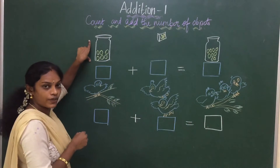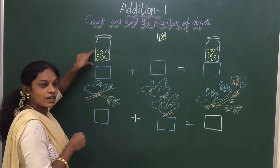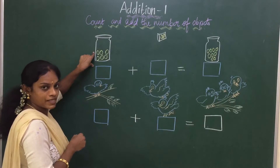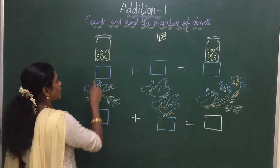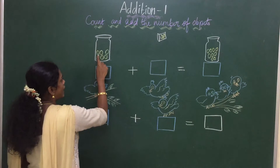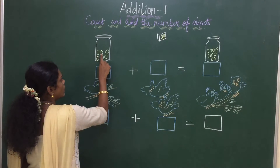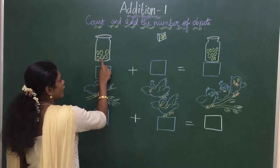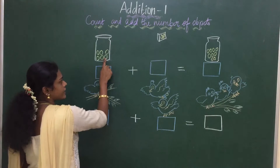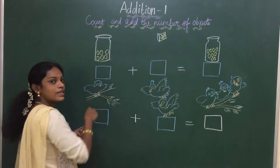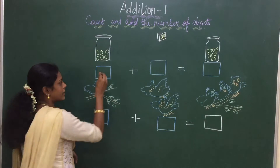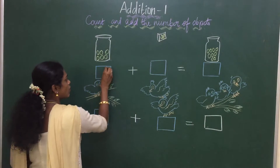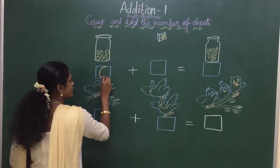Now in this jar you can see the marbles. Let us count: 1, 2, 3, 4, 5, 6. How many marbles are there? 6. So in the box right here, 6.